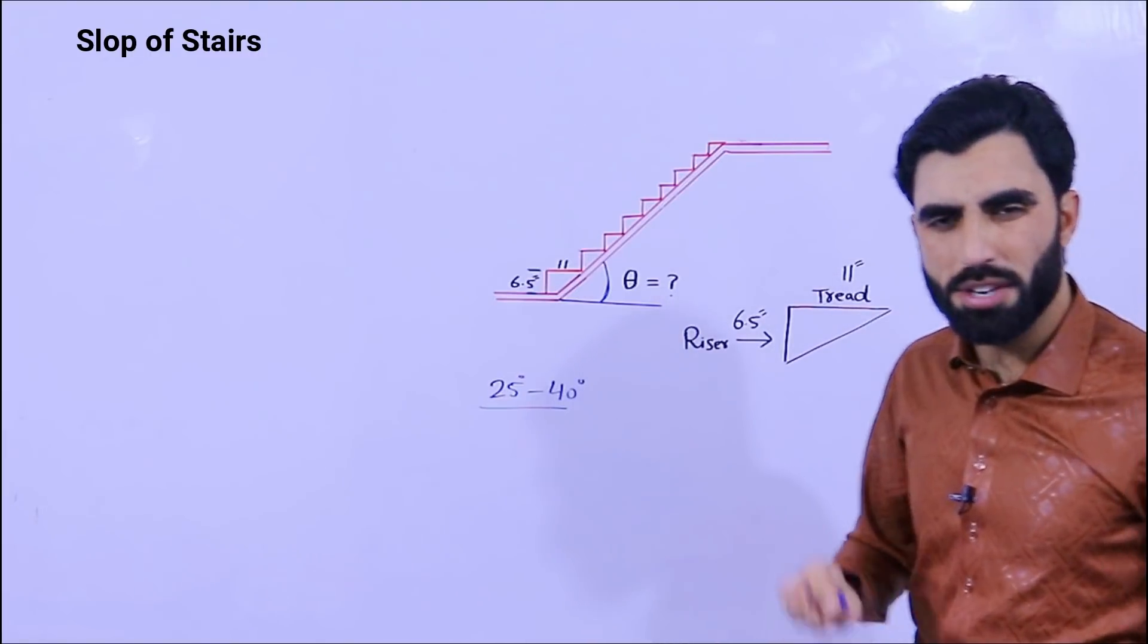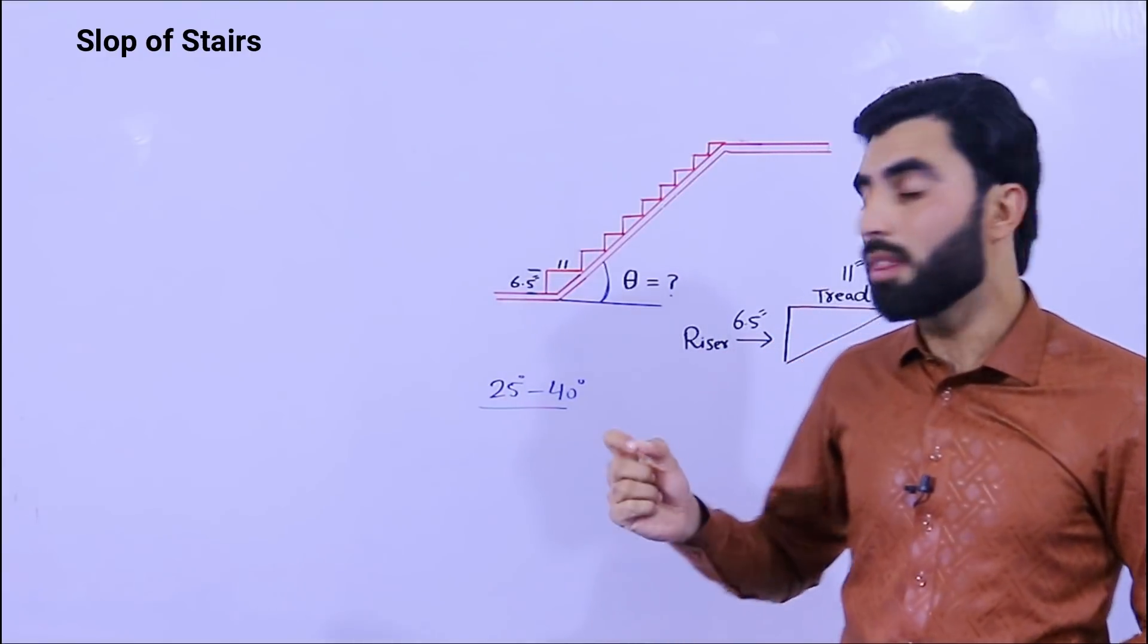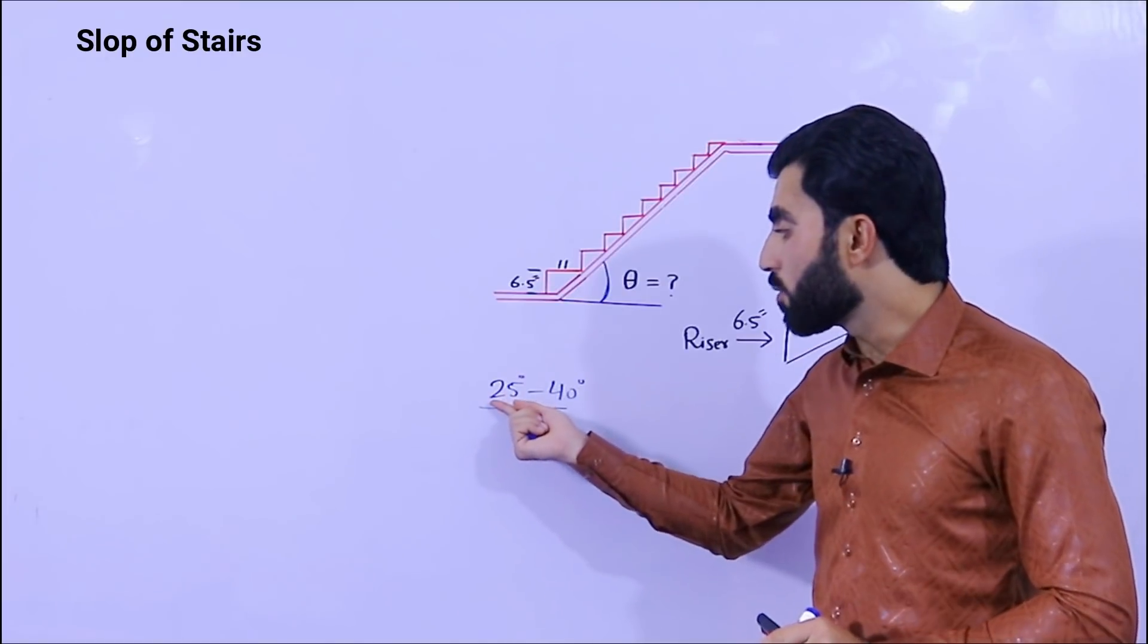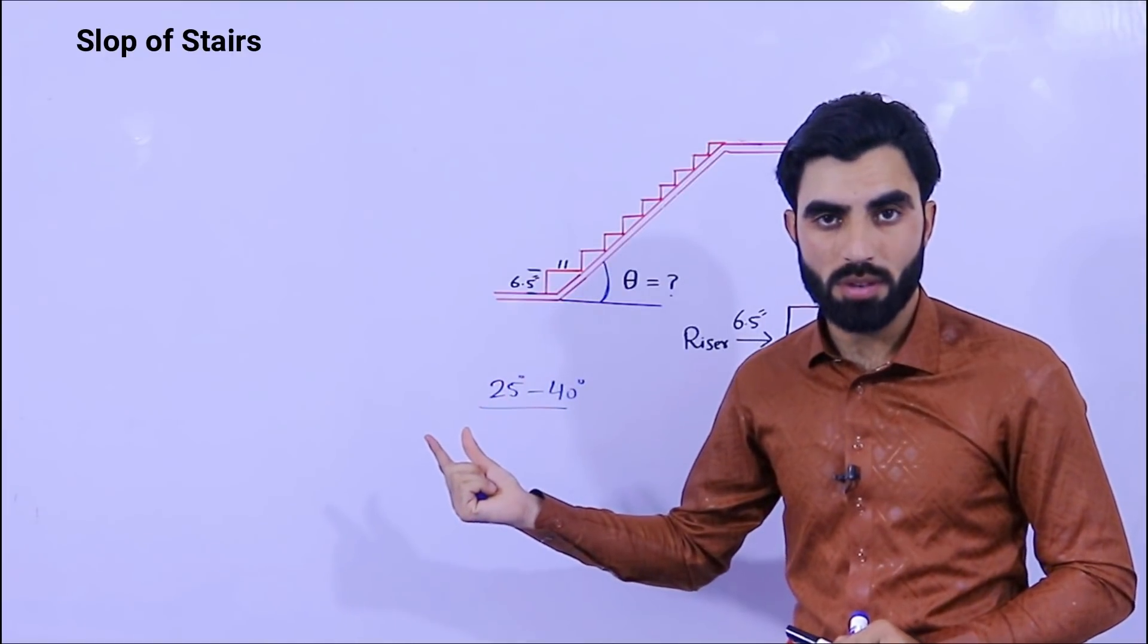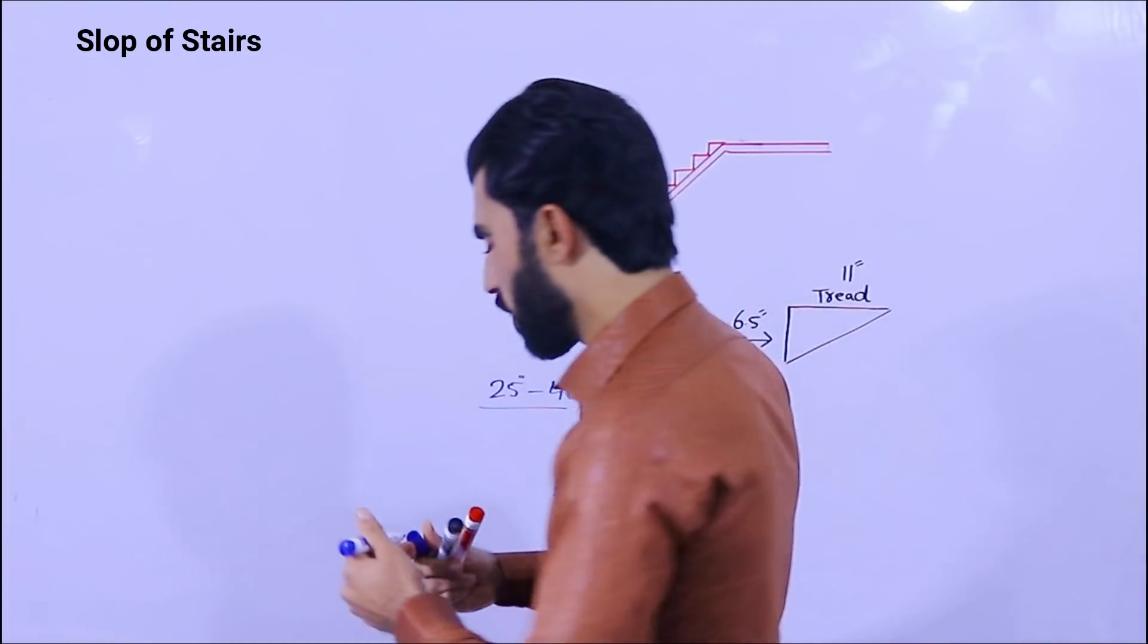Especially for house, for normally residential buildings, also for commercial buildings. But in the house, hospital design, the slope should be about 25 to 30 degrees. So let's get started, how to find the slope of stairs.